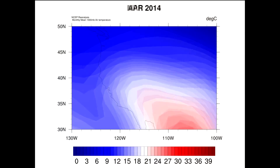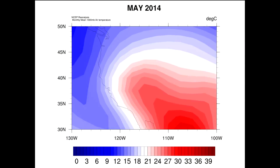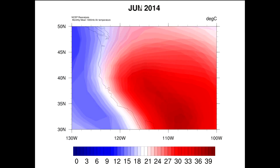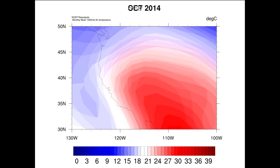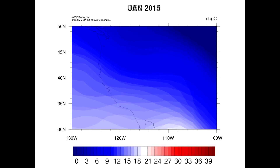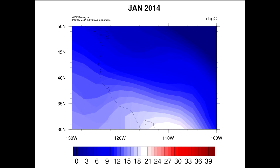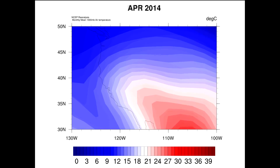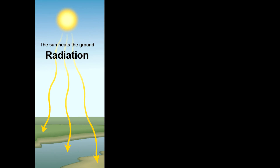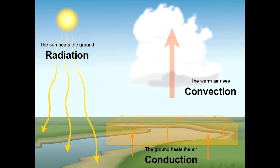We can observe this difference of heating by looking at satellite data. This animation shows how the temperature on land is greater than that of the oceans throughout the year. The rapid heating of land during the summer causes air on the surface to warm and rise by convection, forming clouds.